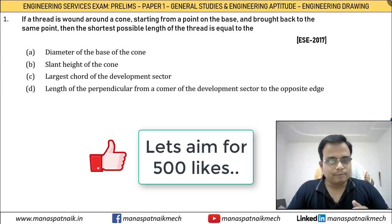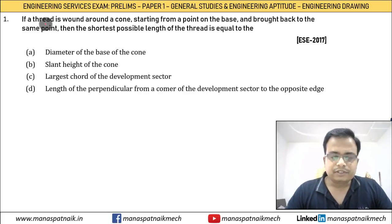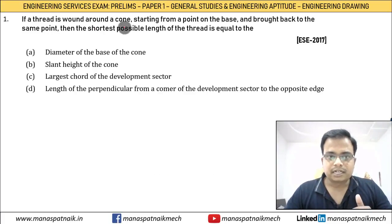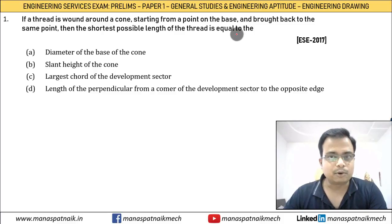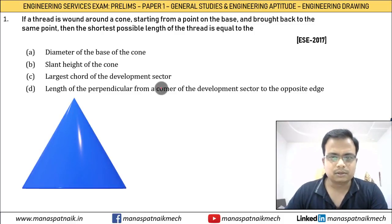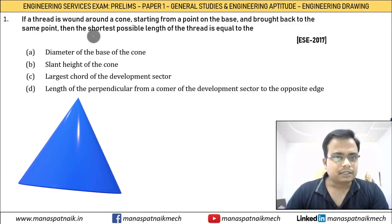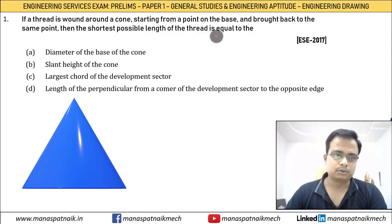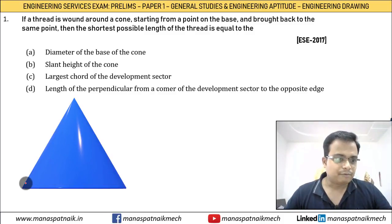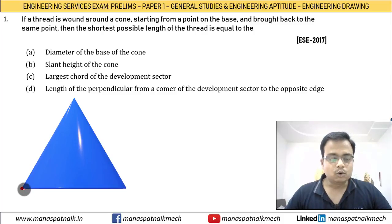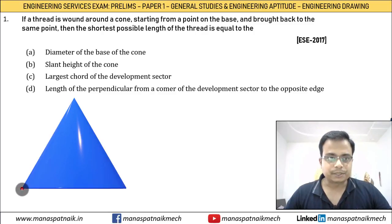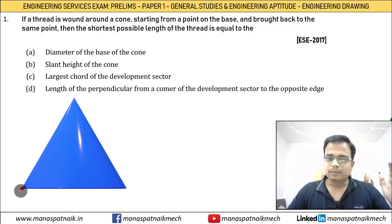If a thread is wound around a cone starting from a point on the base and brought back to the same point, the shortest possible length of the thread is equal to what? We've got a cone and we start from a point on its base, go around the cone, and return to the original position. We need to find the shortest distance.